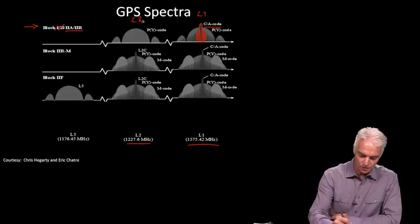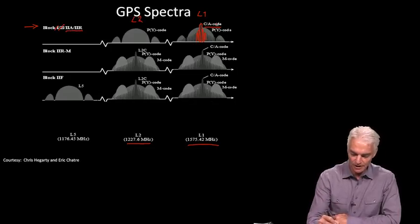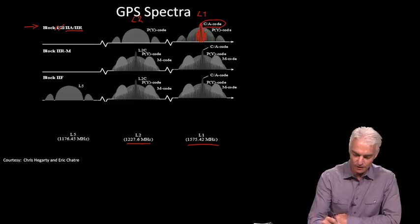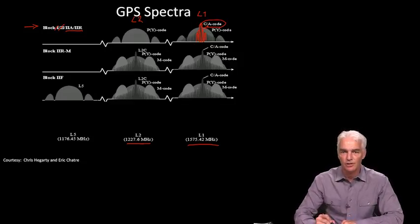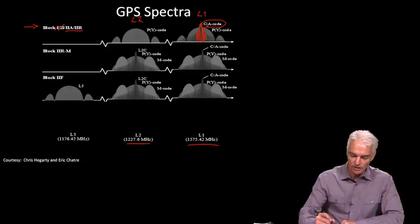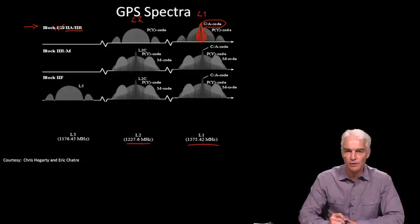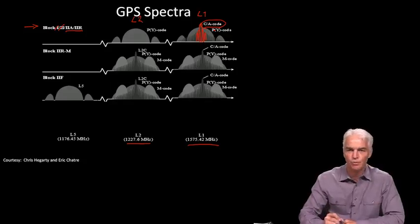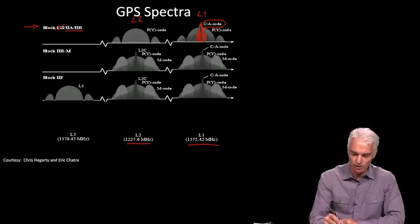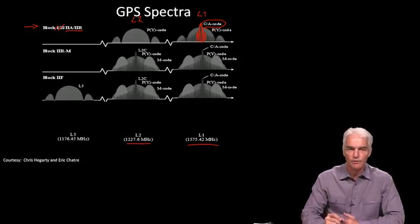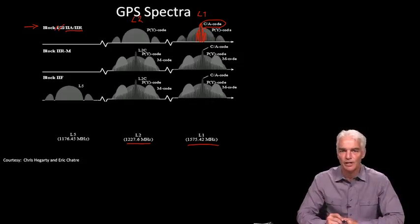There's signals on L1, there's signals on L2. And the CA code, which we use as civilians on L1, is the only thing we've really focused on in this class. The other signals are called P codes, and the P bracket Y stands for an encryption. They're encrypted codes meant for military use, and so they broadcast on L1 and L2 from those particular satellites, 2A and 2R.